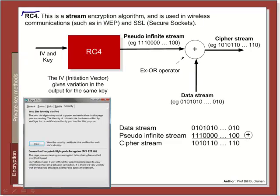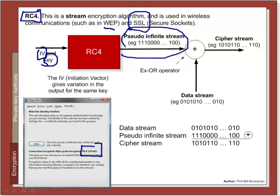For stream encryption, RC4 is one of the most popular — used in wireless communications and for most secure communications over the internet with SSL. With RC4, we take an initialization vector (IV) as salt, combine it with our key, and generate a pseudo-infinite stream. We take the data stream bit by bit and do a simple XOR to produce the cipher stream. For example, 0 XOR 1 gives 1, 1 XOR 0 gives 1, 0 XOR 0 gives 0, 1 XOR 0 gives 1, and so on.